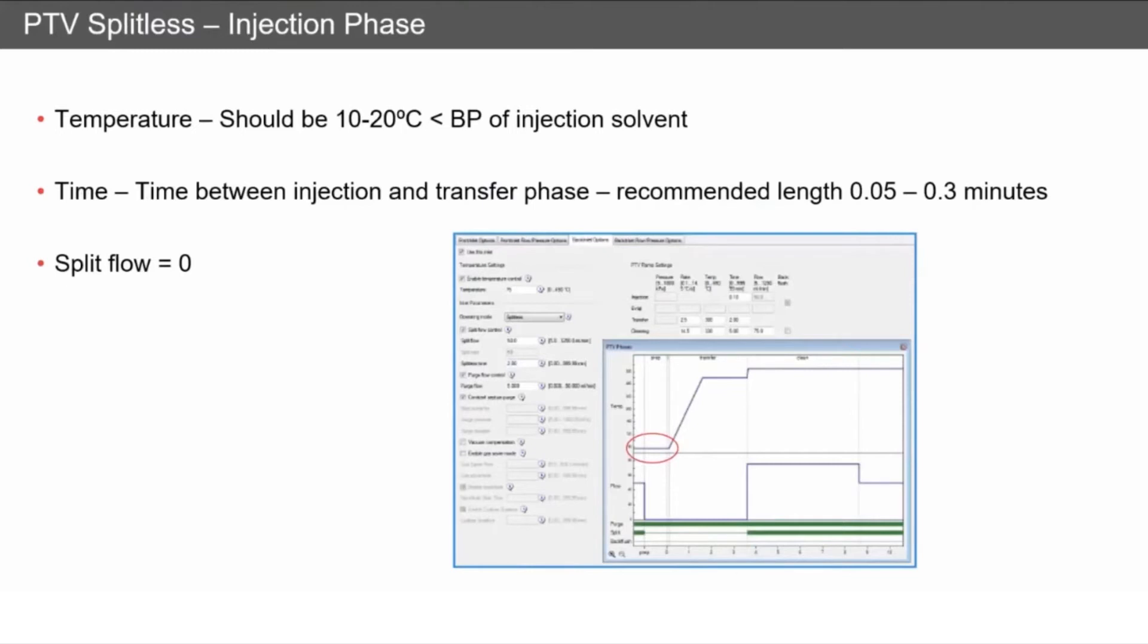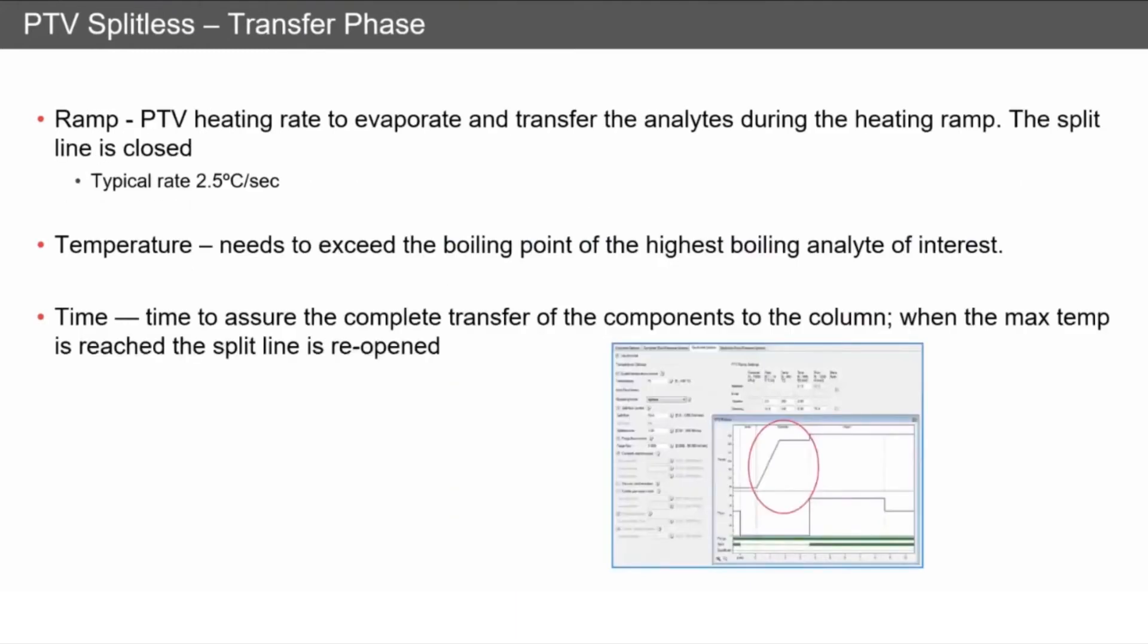Now we're going to transfer everything to our column, so we're going to ramp up the inlet while the split line is closed. It's really important that this rate is controlled. Typically, I'd recommend 2.5 degrees per second. The temperature needs to exceed the boiling point of the highest boiling analyte of interest. So if your highest boiling point analyte is 260°C, we need to go up to 280-300 degrees to make sure it's evaporating and transferring onto the column.